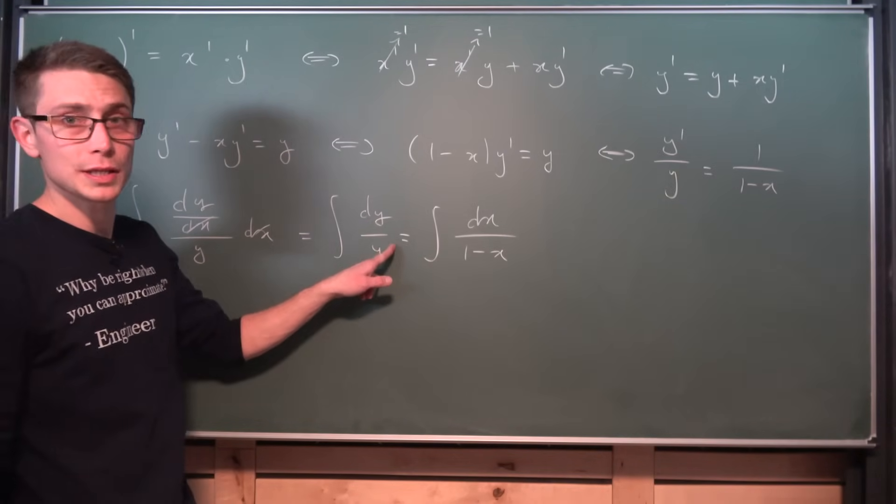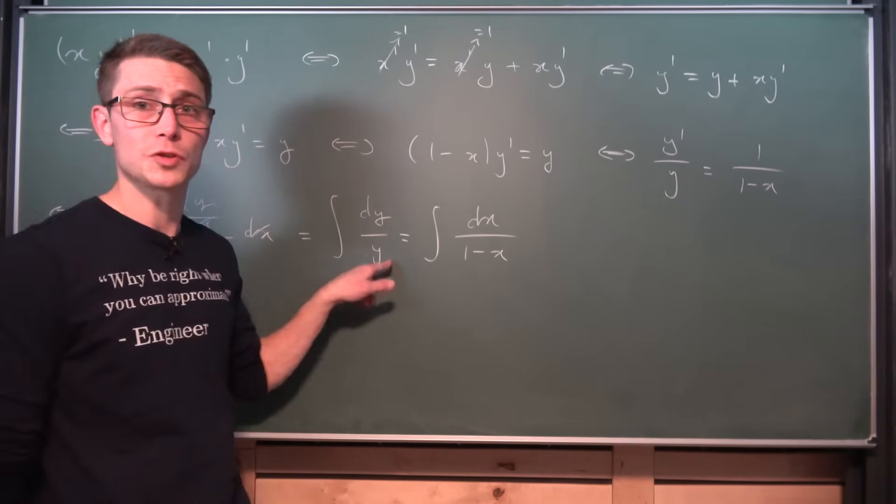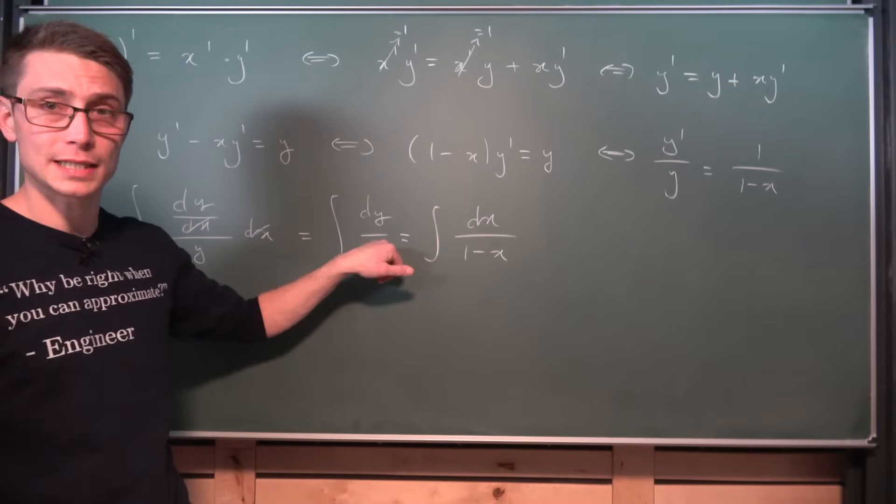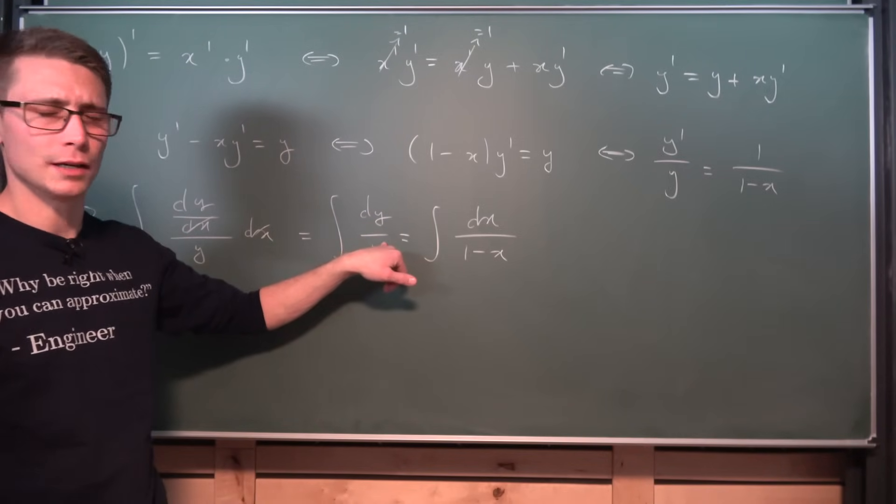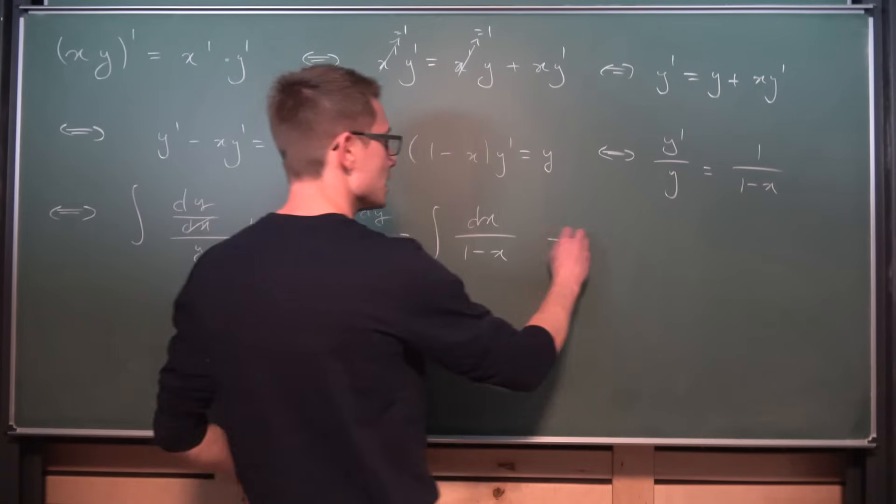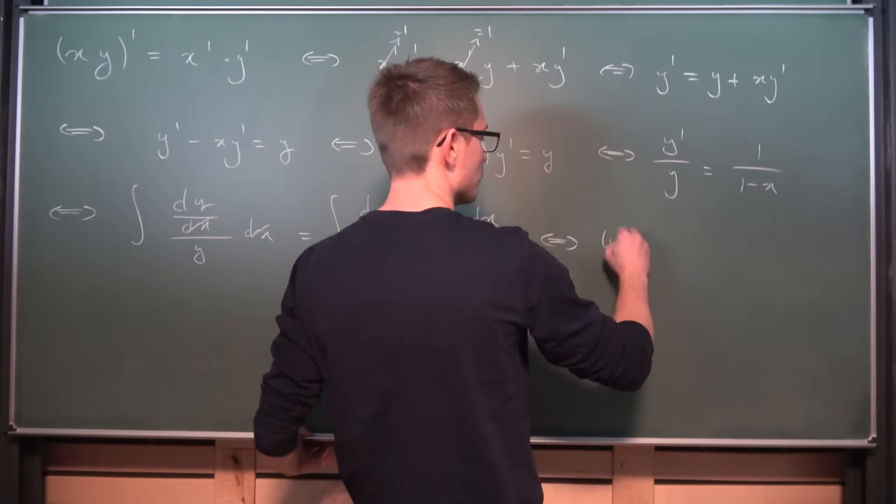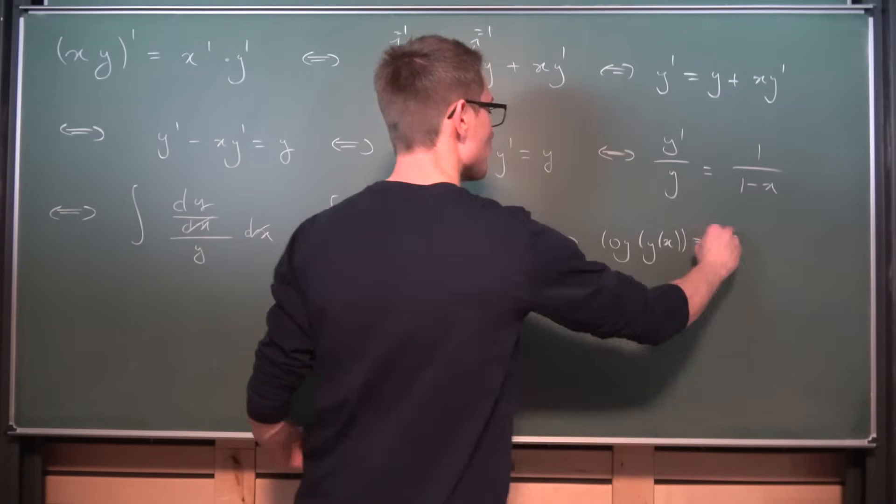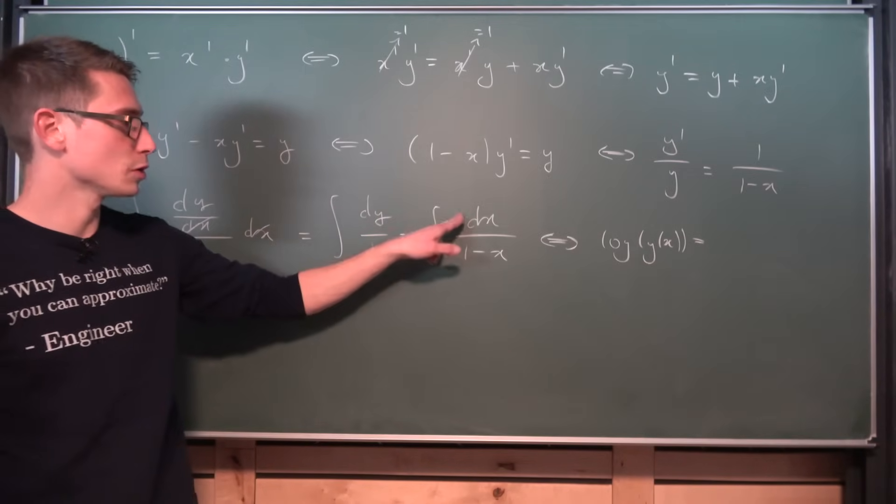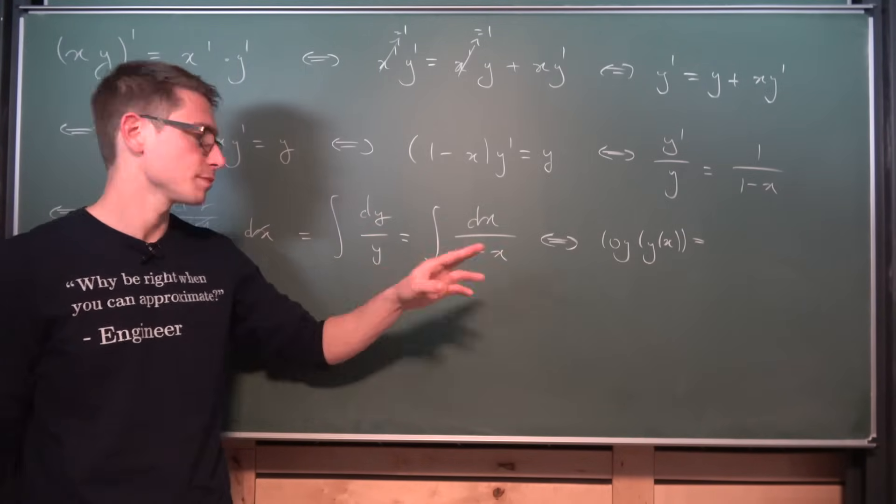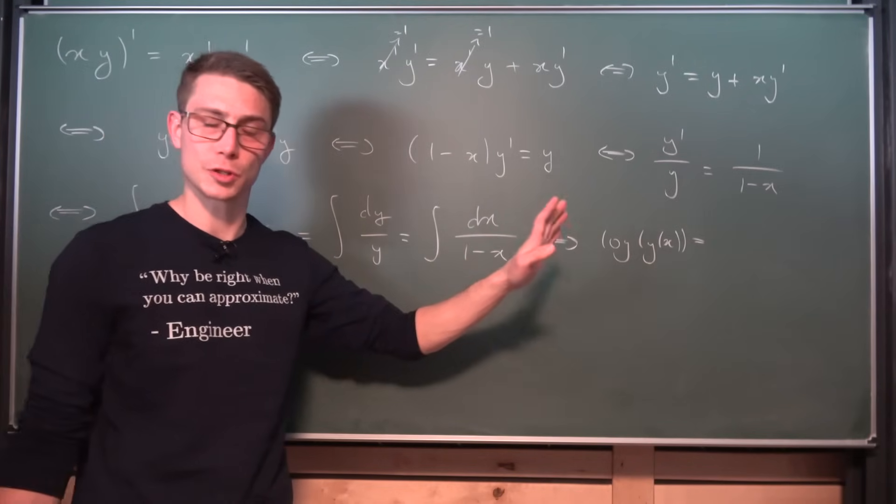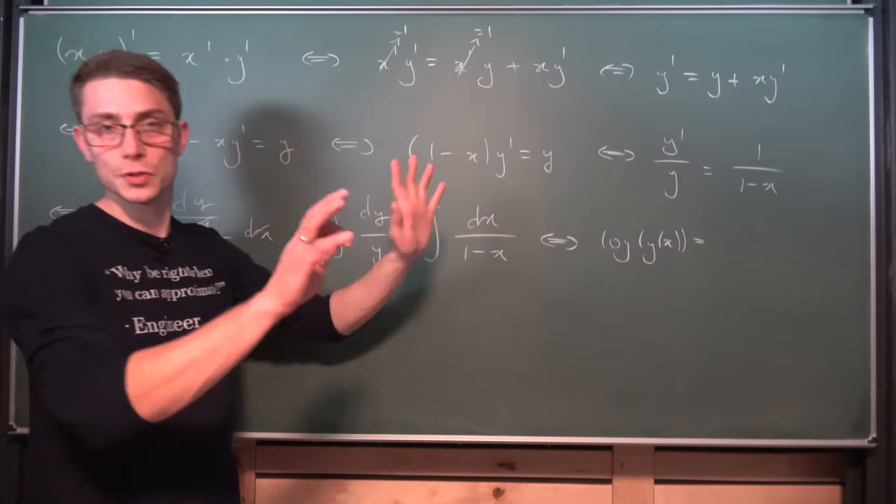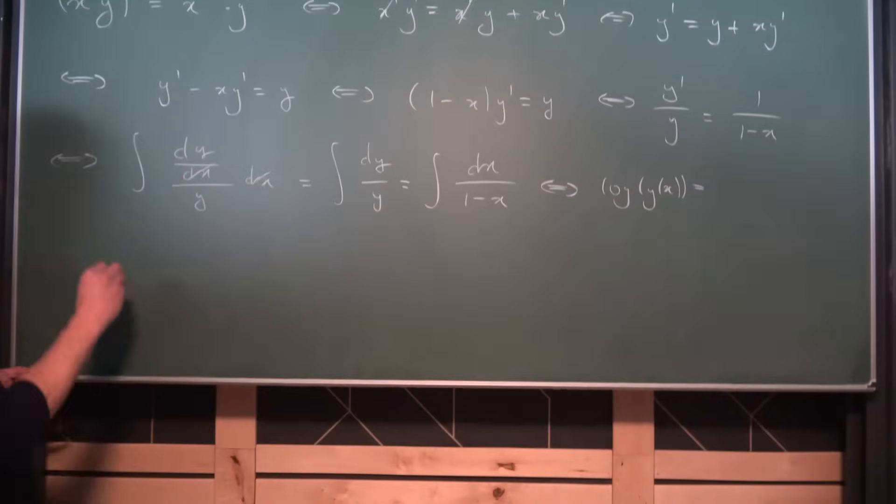Now on the left-hand side, we are simply integrating the function y of x with respect to y, meaning we're going to get the natural log of y. On the other side, we're going to end up with the natural log of y is equal to the integral of 1 over 1 minus x. This is obvious. It turns into a natural log in some kind of way. But we are going to introduce some substitution to make our life a bit easier.